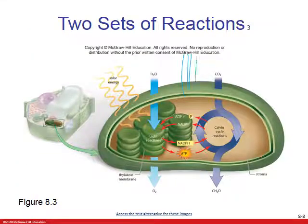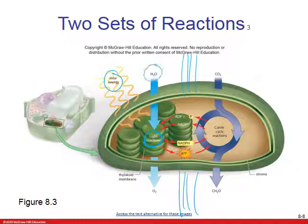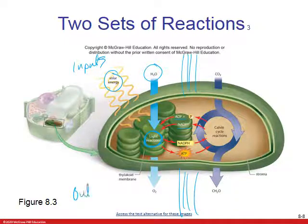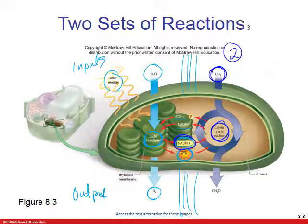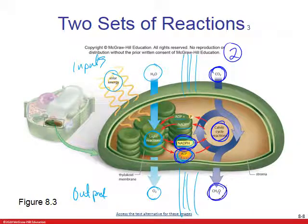Here is a visual representation of the reactions happening in the chloroplast. For the first set — the light reactions — the inputs are solar energy, water, ADP, and NADP+. The outputs are oxygen, NADPH, and ATP. Then for the Calvin cycle, the inputs are CO2, NADPH, and ATP, which get processed through the cycle. The output is carbohydrates.